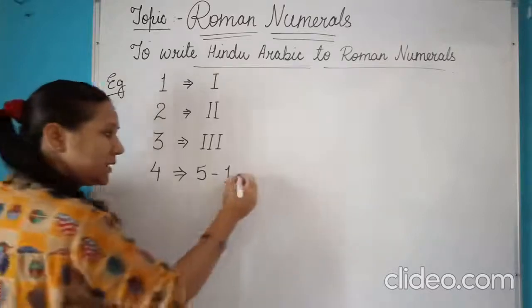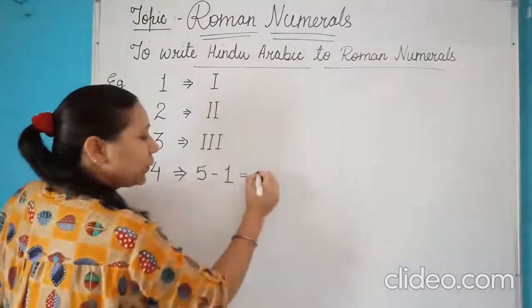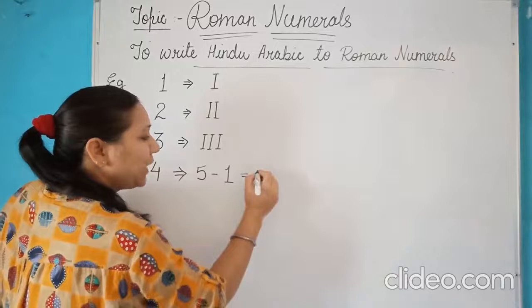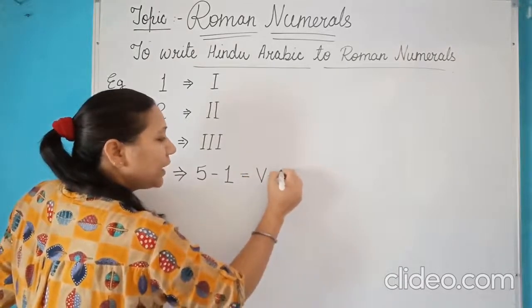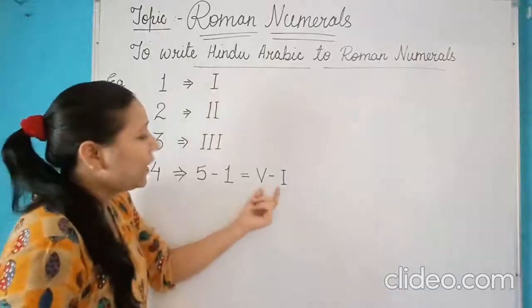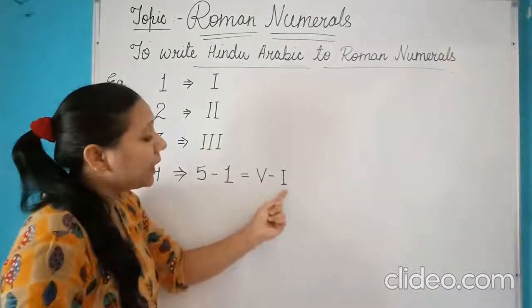5 minus 1, so this will be equals to, what is the symbol for 5? It is V minus, the symbol of 1 is I.